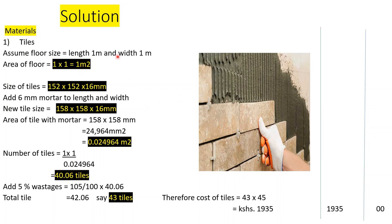We are going to start with the materials. We assume a floor size of 1 m × 1 m — that is the floor where we are laying our tiles — so we can determine the number of tiles needed for that area. Our floor area is 1 m × 1 m = 1 m². The size of the tiles without mortar is 152 × 152 × 16 mm.